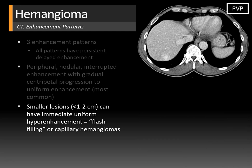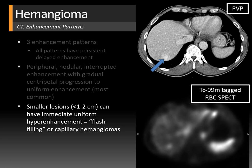The next enhancement pattern is seen with smaller lesions, usually less than one to two centimeters. These hemangiomas can have immediate rapid uniform enhancement and are known as flash filling or capillary hemangiomas. A tagged red blood cell SPECT scan can also be used, showing uptake in the right hepatic lobe — the spleen and aorta are also avid. Red blood cell scans have high accuracy for hemangioma diagnosis, showing persistent delayed uptake similar to CT and MRI.